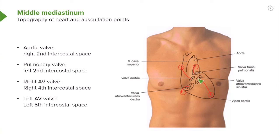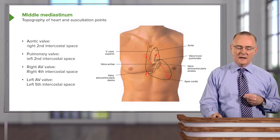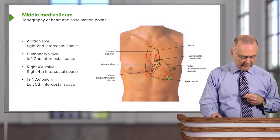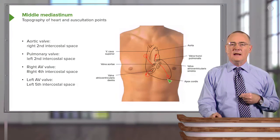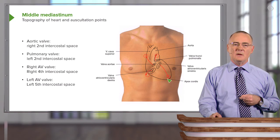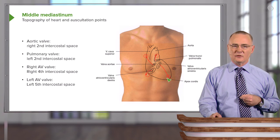Looking at the atrioventricular valves: the tricuspid valve is here, and the best location to auscultate the right atrioventricular valve is going to be in the right fourth intercostal space. The vector associated with the left AV valve indicates we can best hear its closure at the apex of the heart, which is in the left fifth intercostal space.